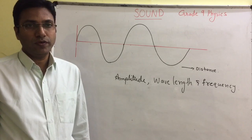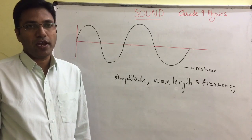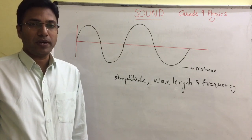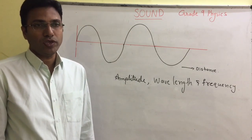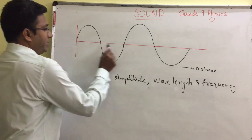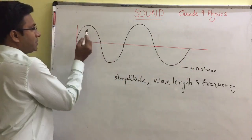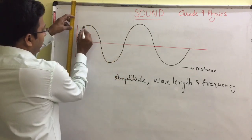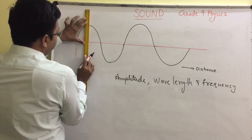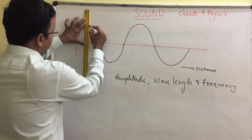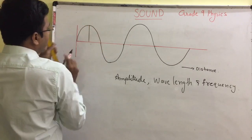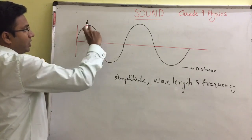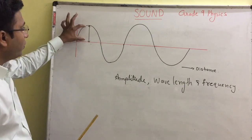Let us learn how to find amplitude, wavelength, and frequency of a given wave. Amplitude means the maximum displacement of the particle from the mean position. This is the mean position, and the maximum displacement is measured from it. Place a ruler at the center of the crest or trough baseline — this distance will give you the amplitude.